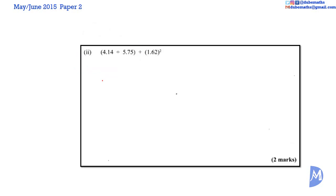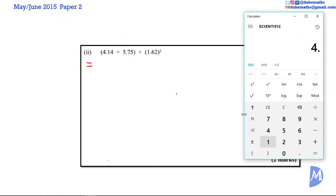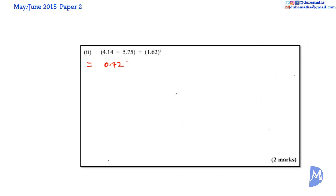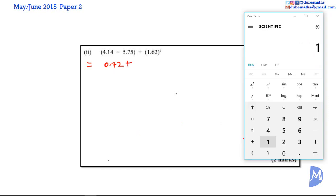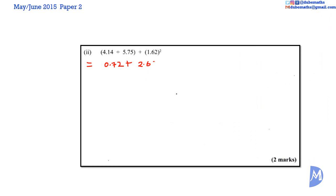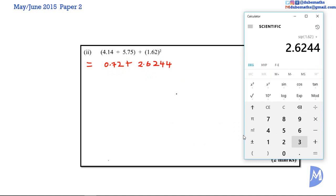Part 2. BODMAS says we work out the brackets first, then the powers, and later on we do the addition. This is equal to 4.14 divided by 5.75, which is equal to 0.72. And we add that to 1.62 squared, which is 2.6244. So now we add 0.72 to 2.6244. It's equal to 3.3444.